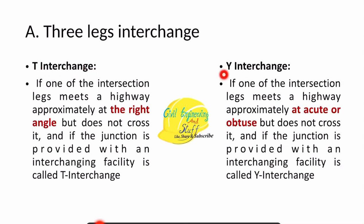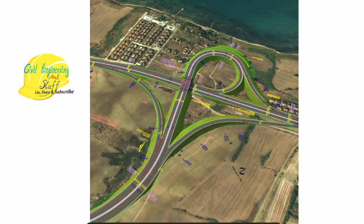In a T-interchange, the interchange legs meet at a right angle but do not cross it, forming a T-shape. When the angle is acute or obtuse instead of a right angle, it is called a Y-interchange. You can see in this example of a Y-interchange, the parts connecting roads at different elevation points form angles that are more or less acute.